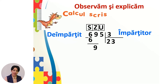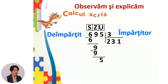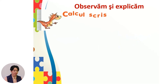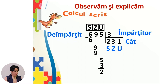Verificăm: 30 × 3 = 90. Coborâm cifra unităților. 5 unități împărțind la 3, obținem la cât? 1 unitate. Verificăm: 1 × 3 = 3. 5 − 3 = 2. Am obținut câtul 231 și restul 2. Verificăm: restul 2 este mai mic decât împărțitorul 3. Dacă înmulțim câtul 231 cu împărțitorul 3 și adunăm restul 2, vom obține împărțitul 693.